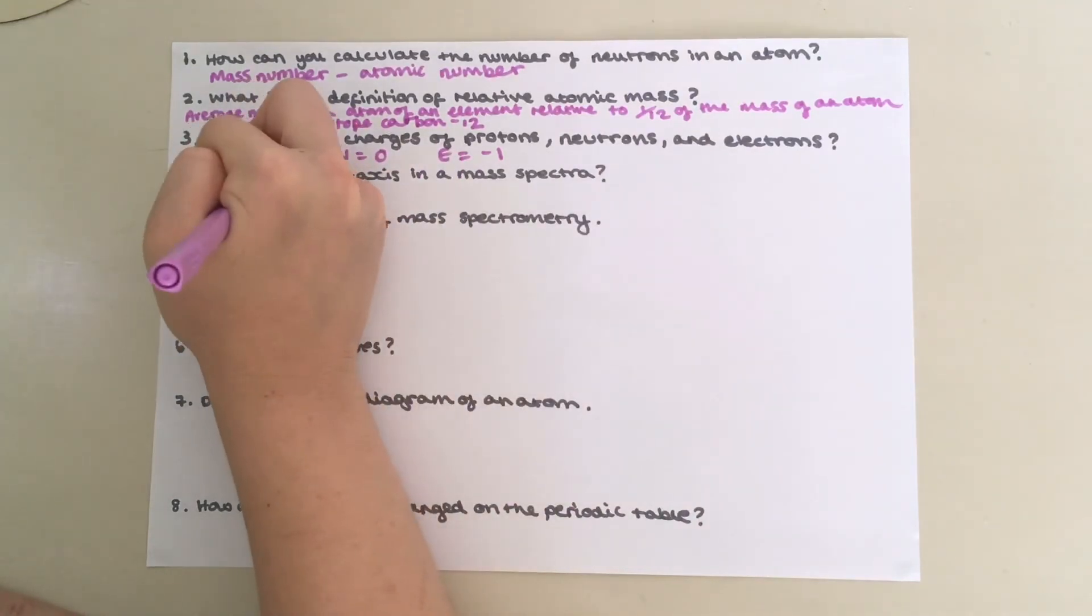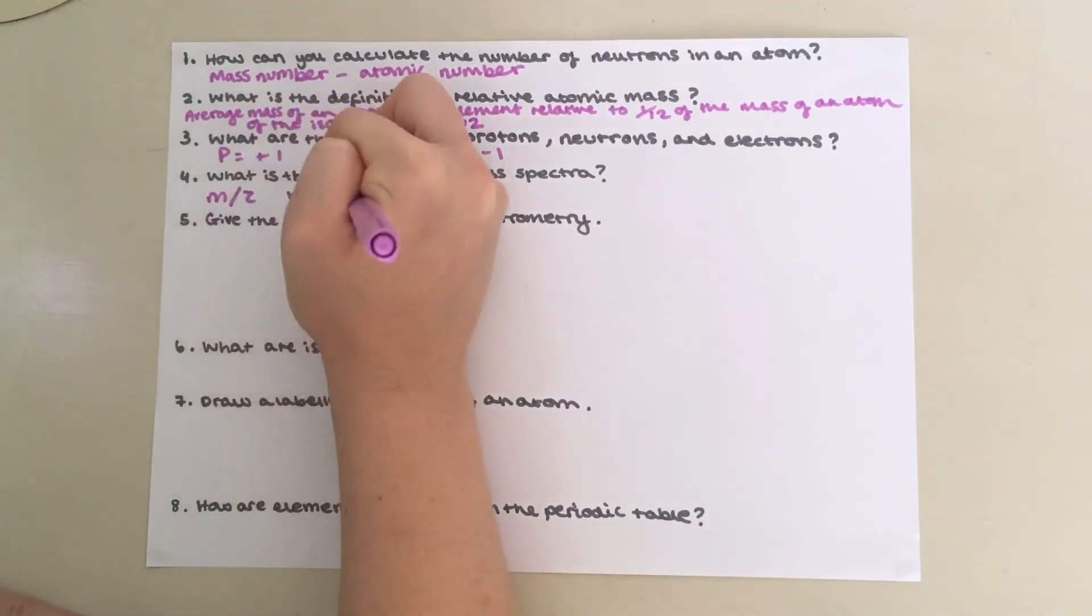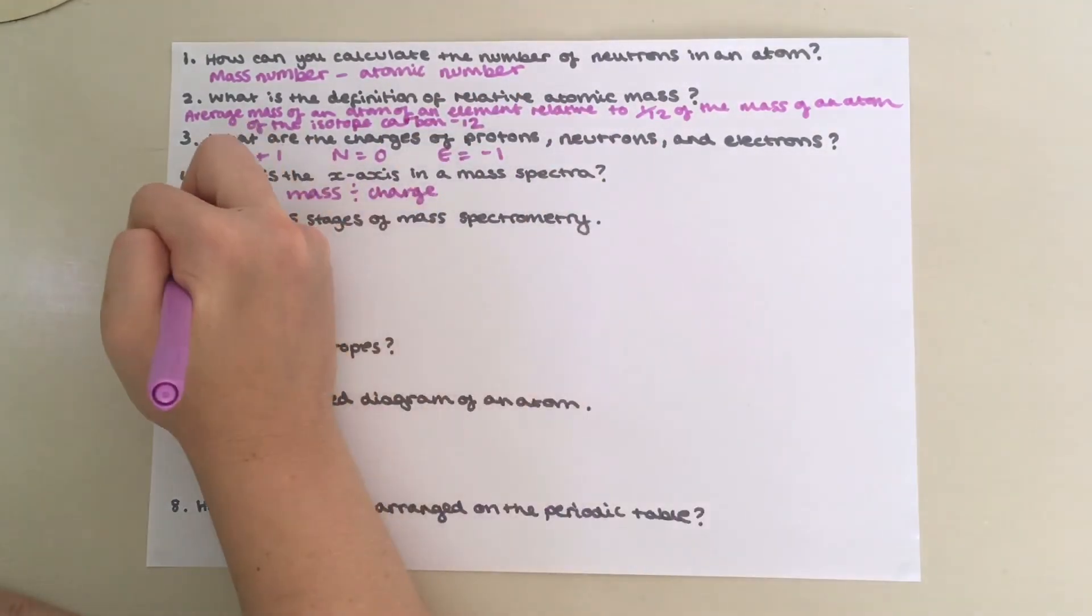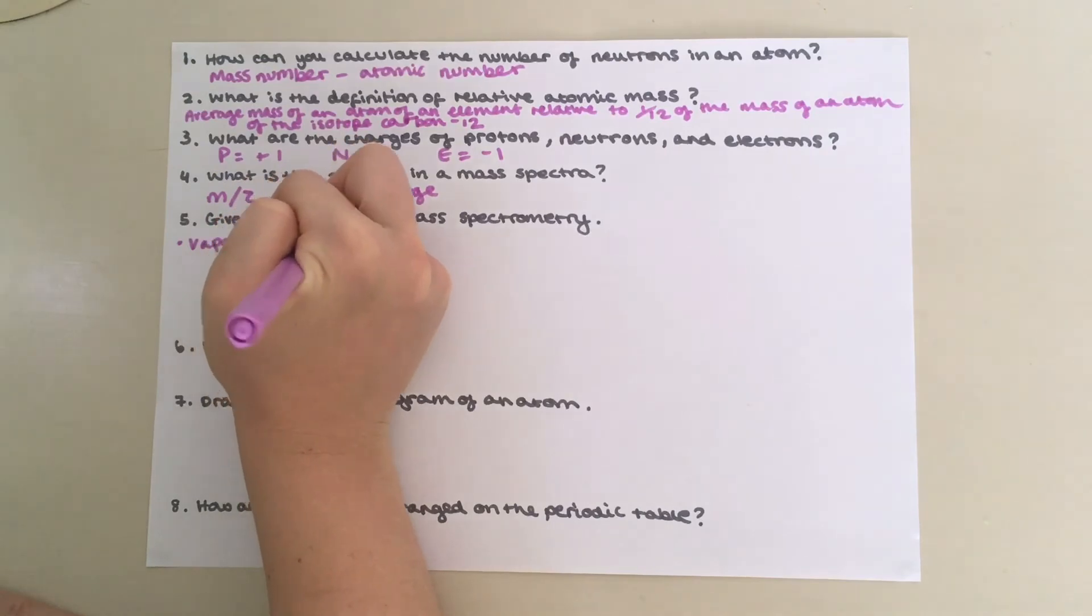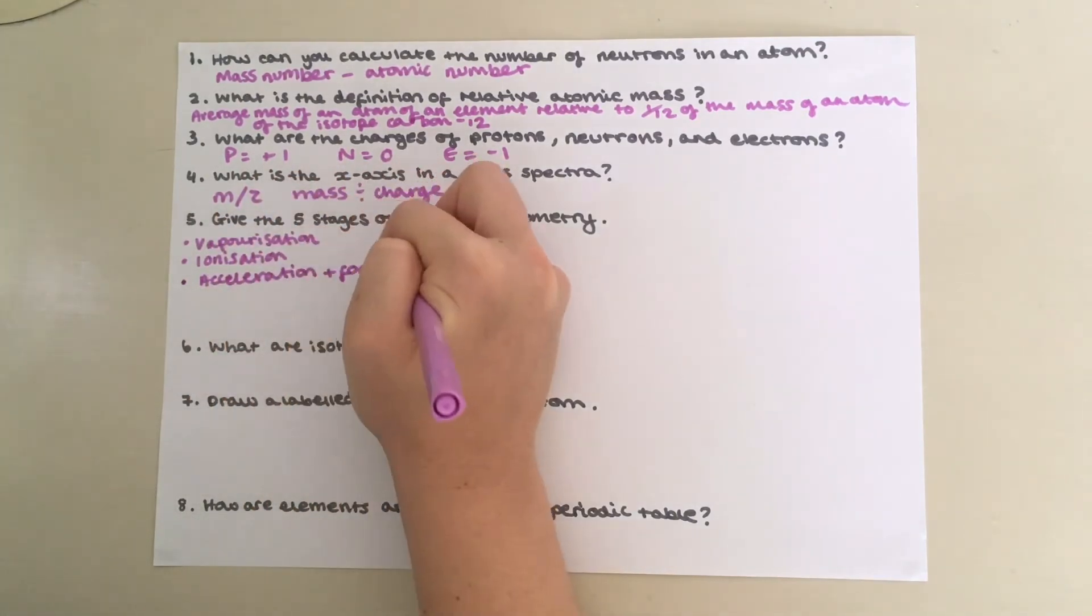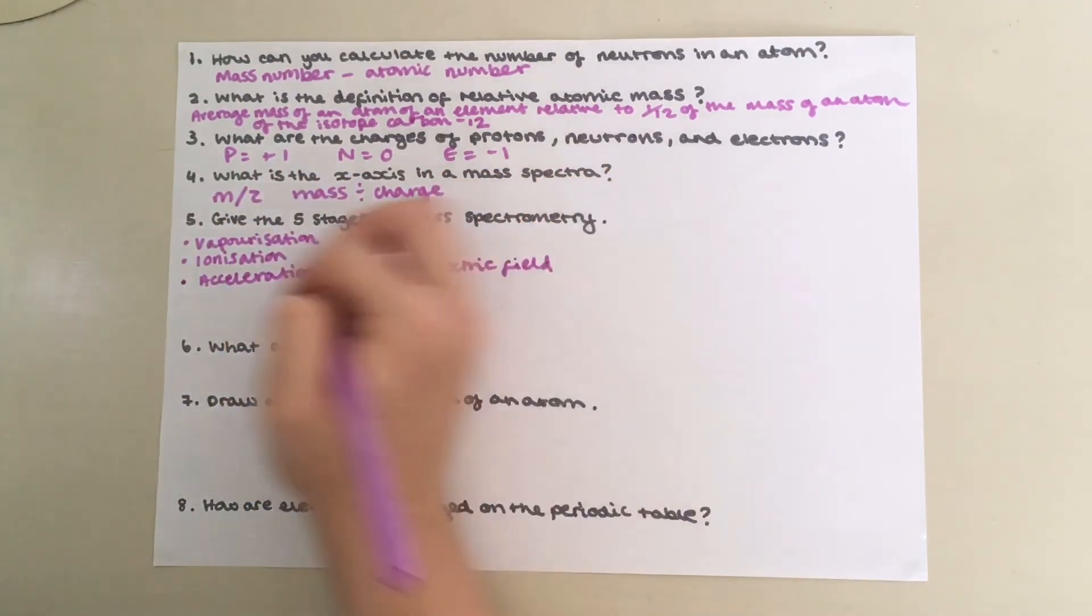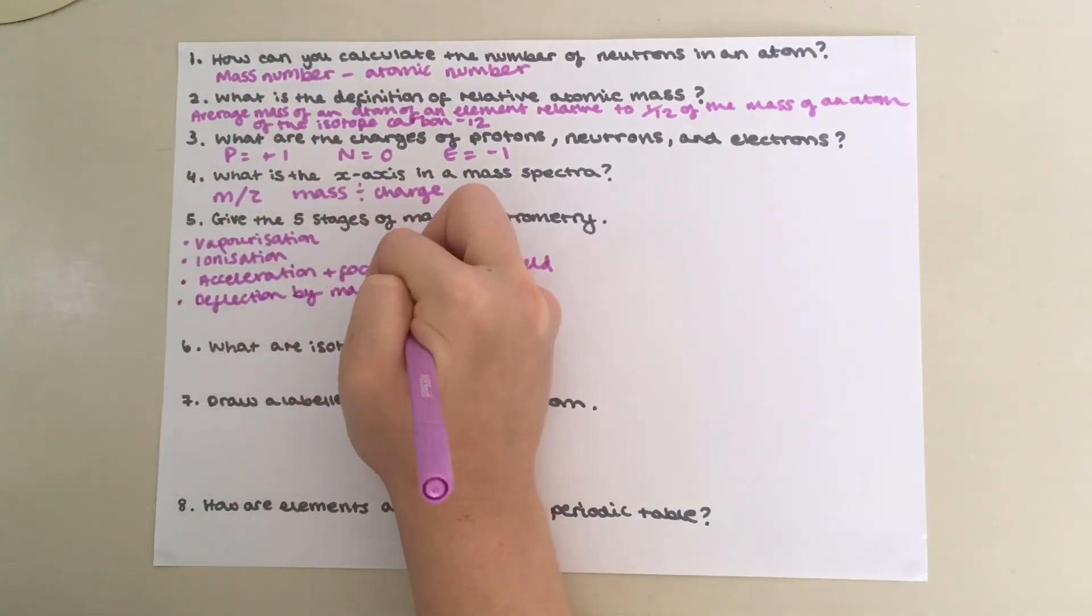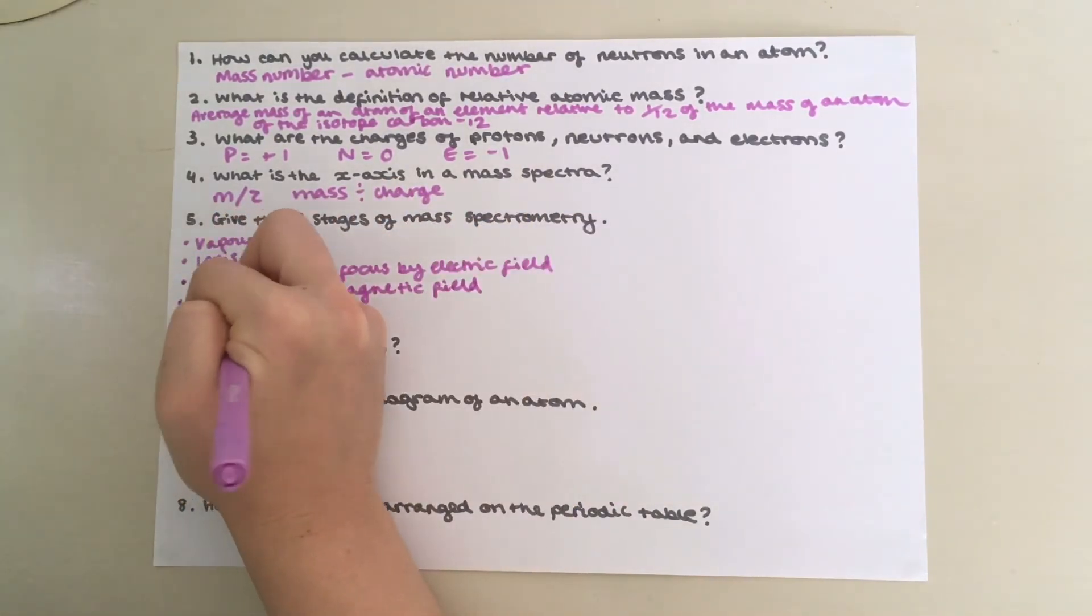Question 4: The x-axis in the mass spectra is m over z, or mass divided by charge. Question 5: So the first step of mass spectrometry is vaporization of the sample. Then you have ionization by bombardment of electrons with an electron gun. Then you have acceleration and focus by electric field, deflection by magnetic field, and then detection by an ion counter.